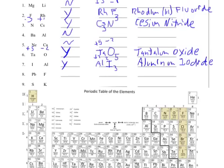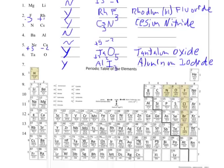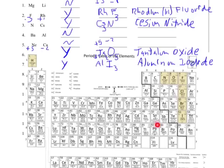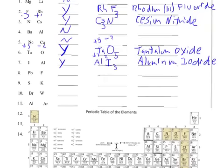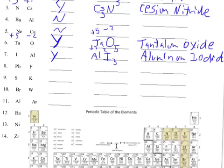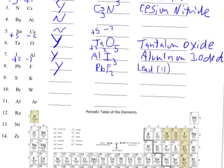Next, I have lead and fluorine. Lead is either plus 2 or plus 4 — in this case I'm going with plus 2. Fluorine is a minus 1. Yes, I can form a compound. I put lead first — and since I have one of these I give it fluorine's number, which is 1 (not written), then fluorine gets lead's number, which is 2. That gives PbF2. Since lead can form more than one ion, I use Roman numerals: lead Roman numeral 2 fluoride.